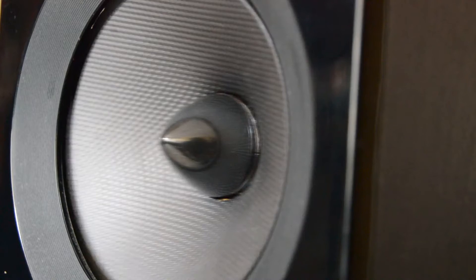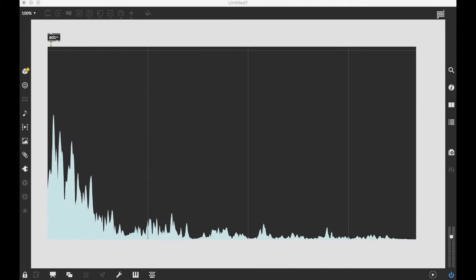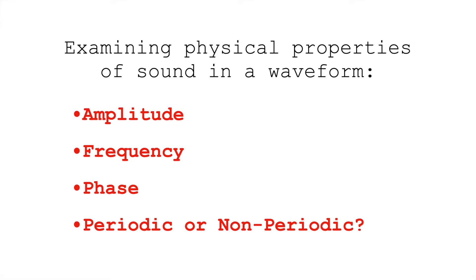These waveforms are sometimes called time domain graphs. Remember, the domain is the x-axis of a graph, and since time is our x-axis, this is a time domain graph. There are other ways to graph sound — frequency domain graphs — but we'll set those aside for today. Looking at these waveforms, let's focus on four physical properties: the amplitude, the frequency, the phase, or whether or not this waveform is periodic.